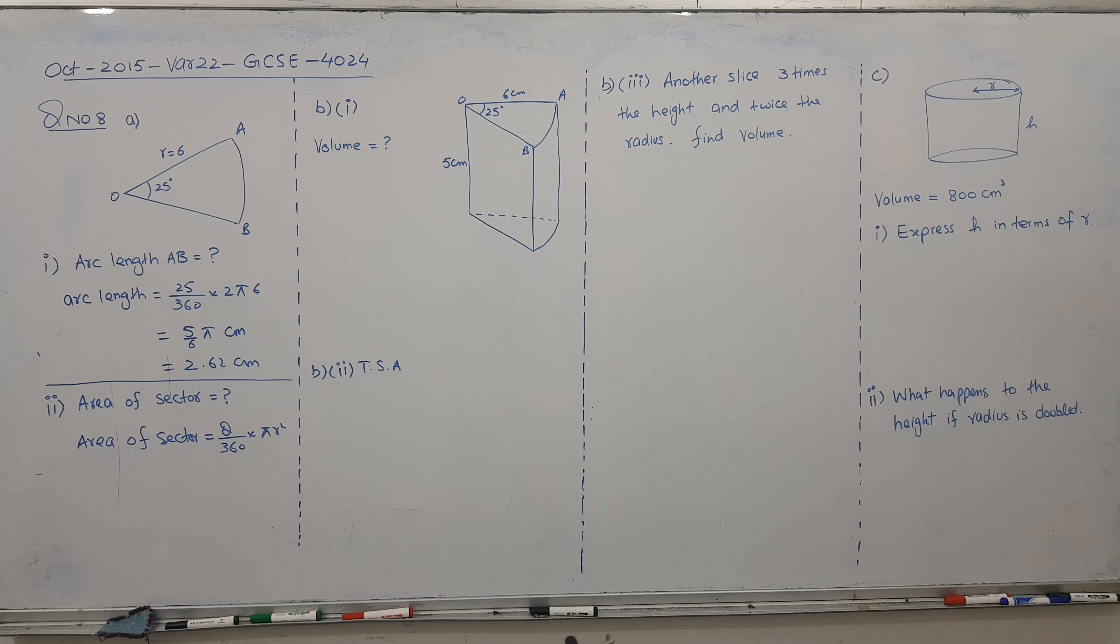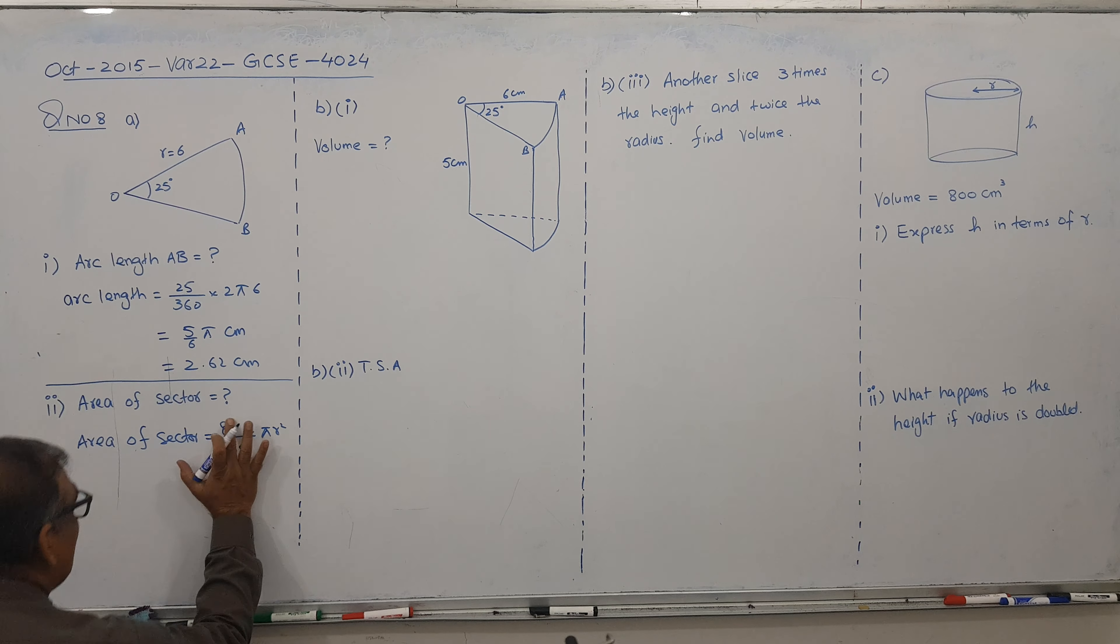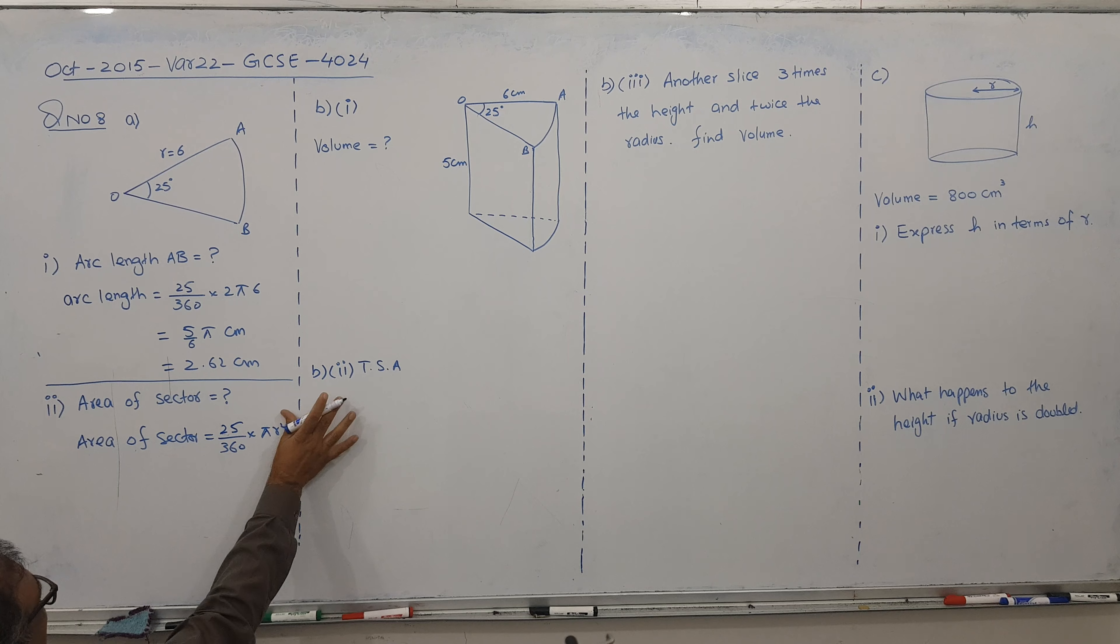All right. So let's go for the next part. Next part is, he's asking that this one. So replace the angle theta. So replace the angle theta, which is 25. Radius is 6.